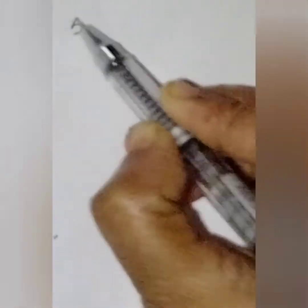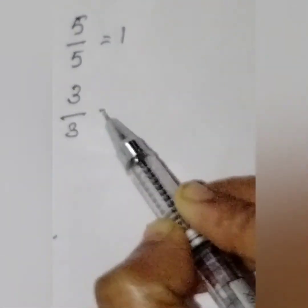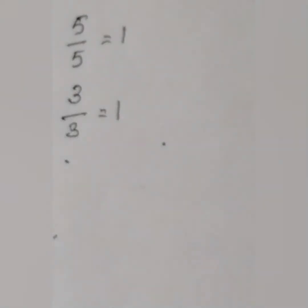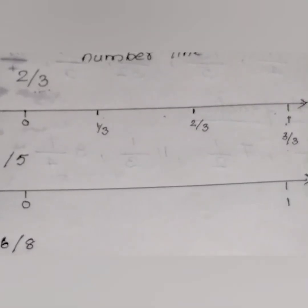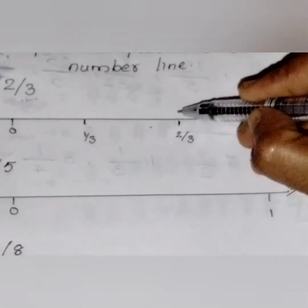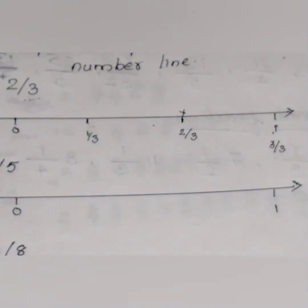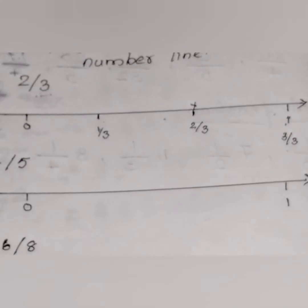For your better understanding I have written 3/3 and 1. If the numerator and denominator are the same, it means that whole number. Now coming back to the number line, we have to mark 2/3. I hope it is understood.